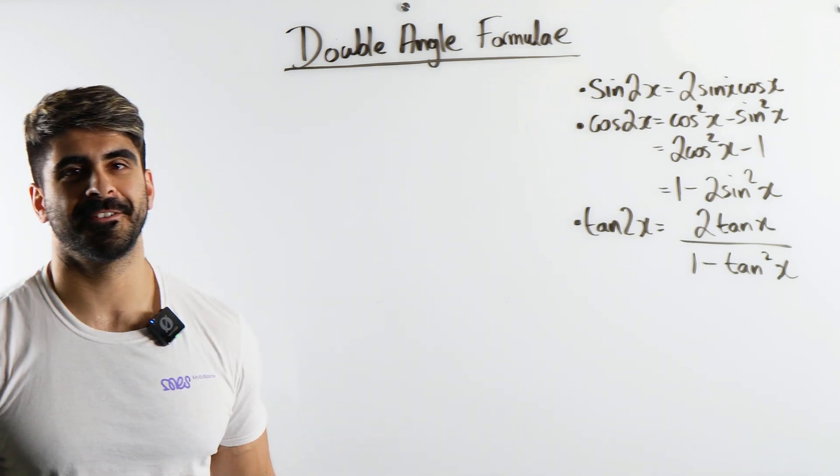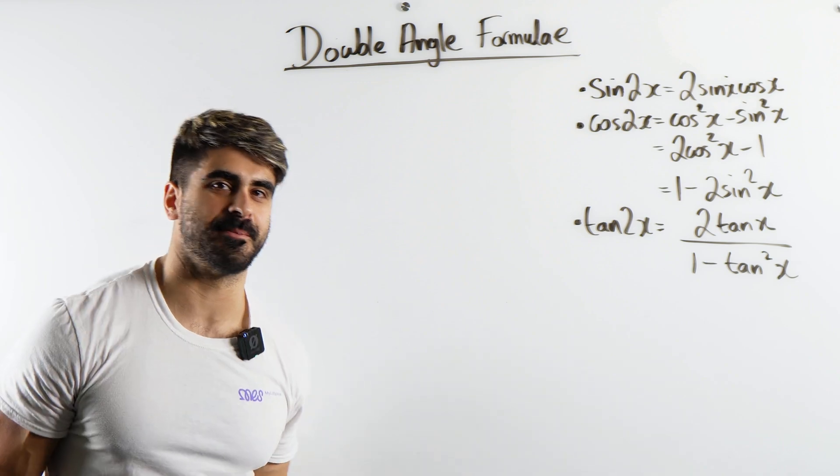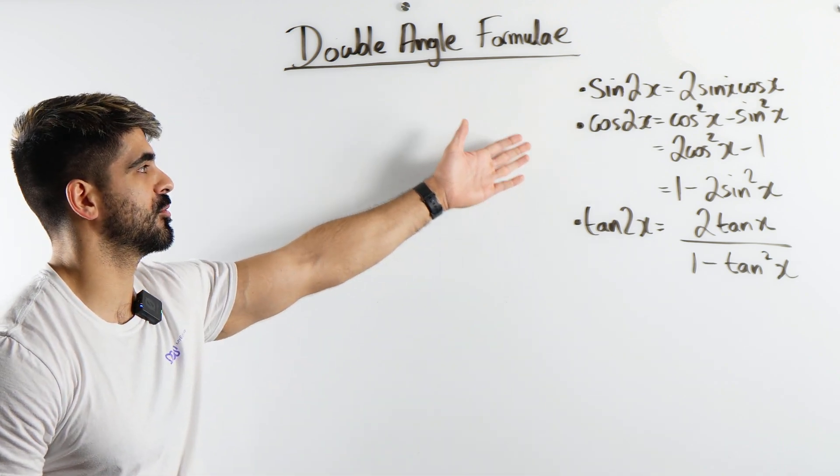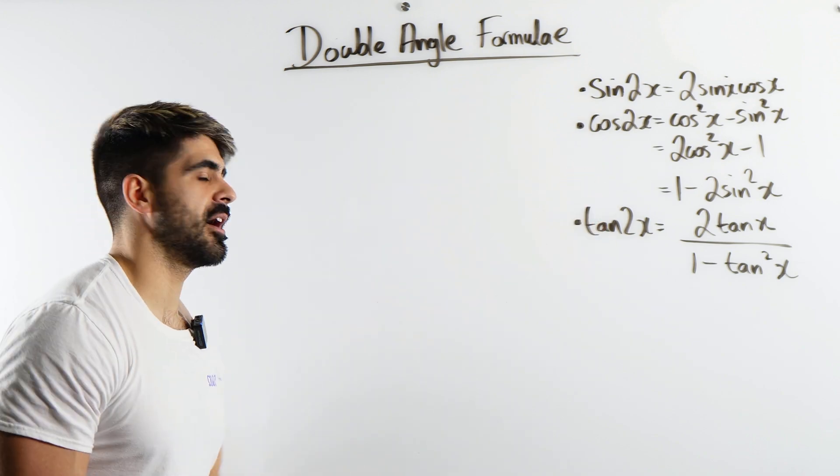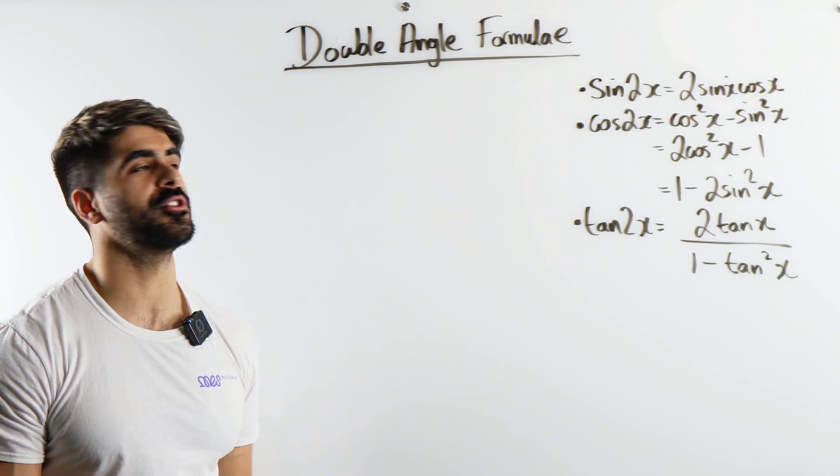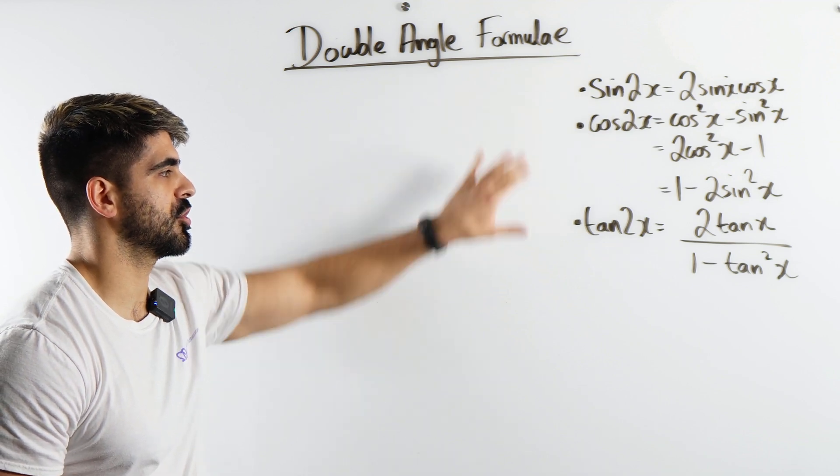What's up waste man? You need to know how to prove all the double angle formulae for your A level exams. Now there's what? 1, 2, 3, 4, 5 of them. Super easy to prove. But unlike the addition rules which I proved for you, which you don't need to know apart from tan, you need to know how to show all of these guys.